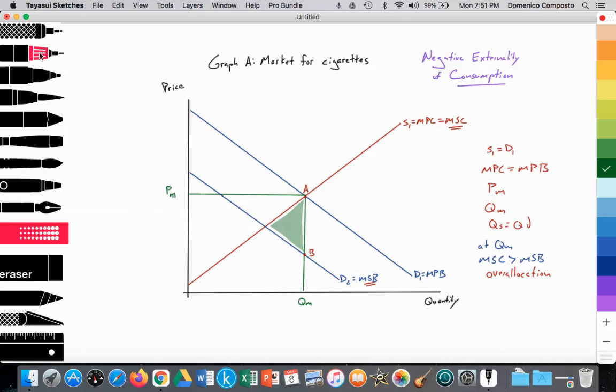One little technique, one little strategy, just to remember whether or not you have drawn the welfare loss correctly, is remember that if it's negative, society wants less. So if you imagine this as an arrow, it should be pointing inwards, because society would like less of it. Okay?